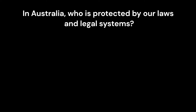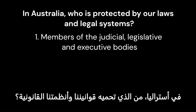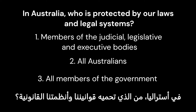In Australia, who is protected by our laws and legal systems? 1. Members of the Judicial, Legislative and Executive Body. 2. All Australians. 3. All members of the government. Exactly, that is right. 2. All Australians.